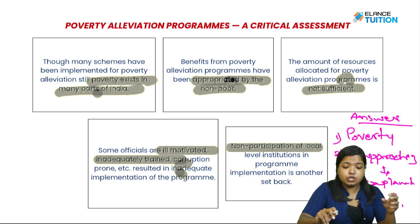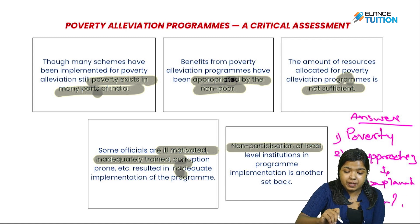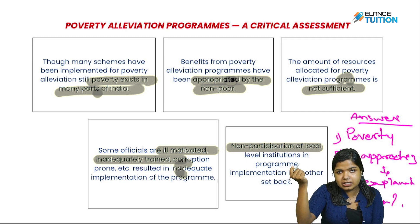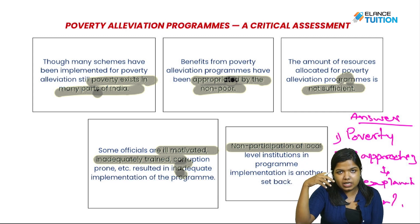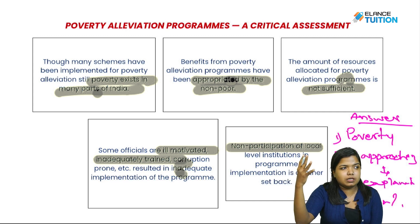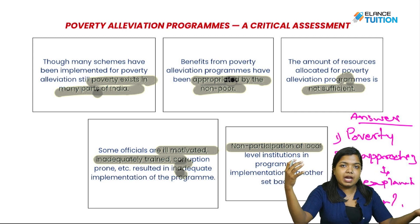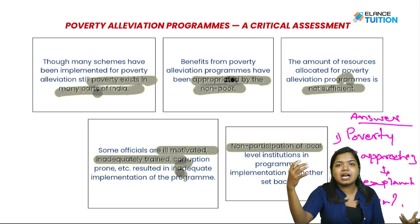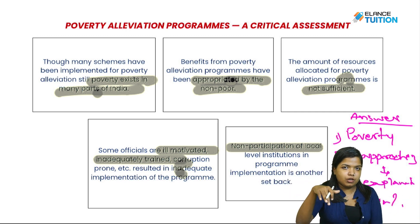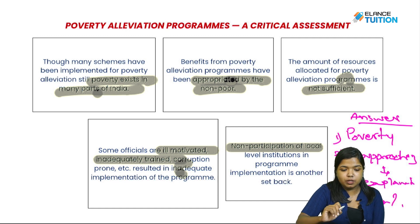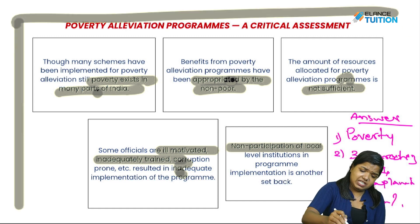Non-participation of local level institutions in program implementation is another setback. There are many local level institutions — residential groups, political parties, women associations — and there should be more support and involvement. Because any government decision, if it has to be executed properly, needs local participation. This critical assessment has 5 simple points.